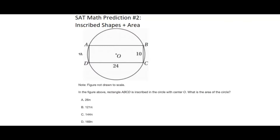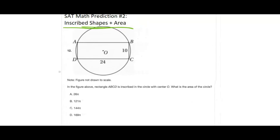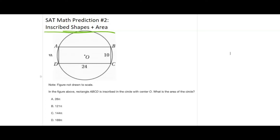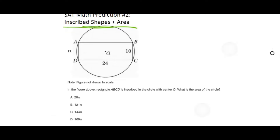Our next prediction is for the math section and has to do with inscribed shapes and area. Essentially, on the SAT you might see an inscribed rectangle inside a circle, or maybe a triangle, trapezoid, or something more complex. What they're really testing is whether you know the formulas — which are given to you — and can utilize those formulas along with other features like the Pythagorean theorem or special right triangles to find the area of either shape or part of those shapes.